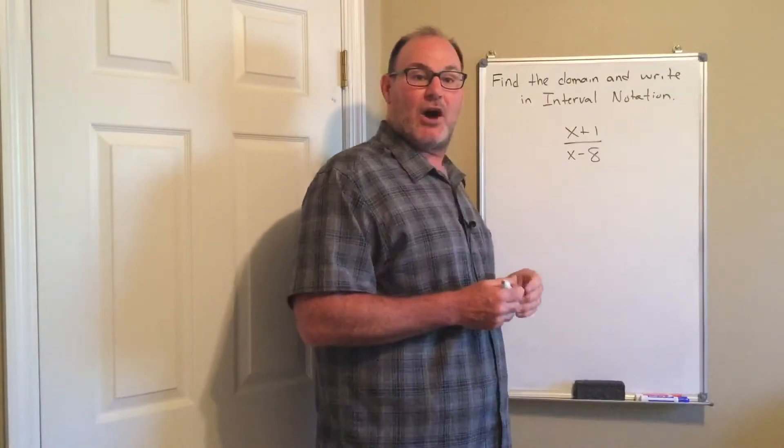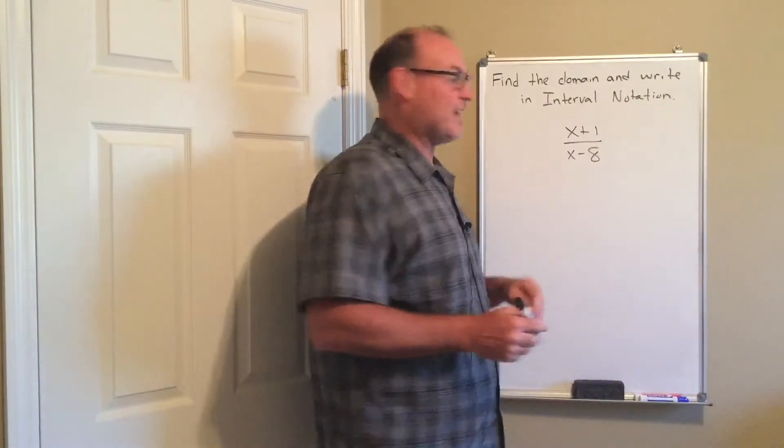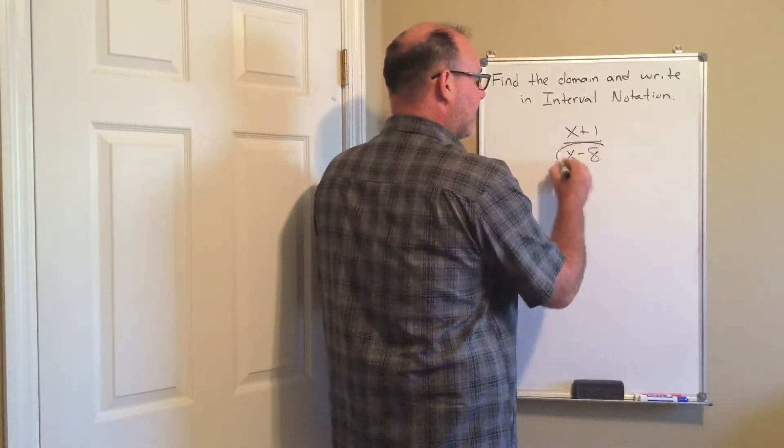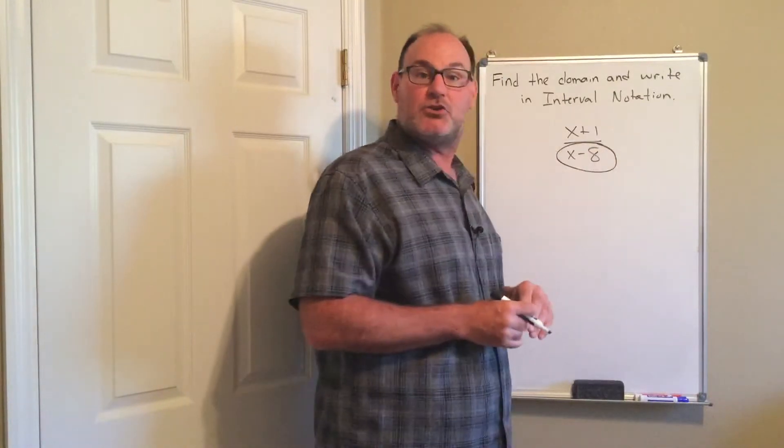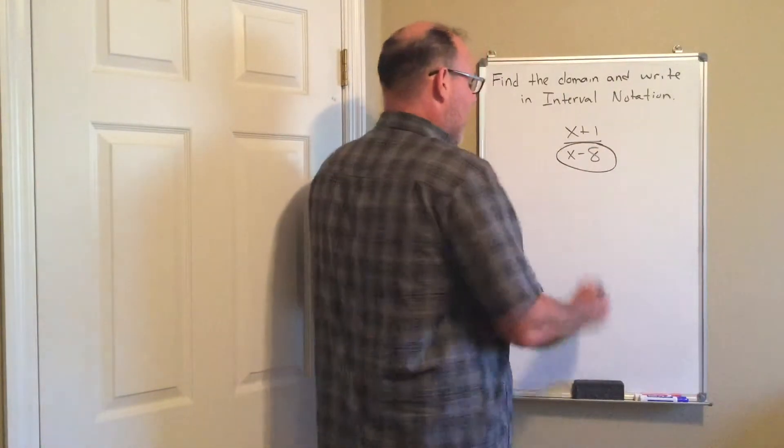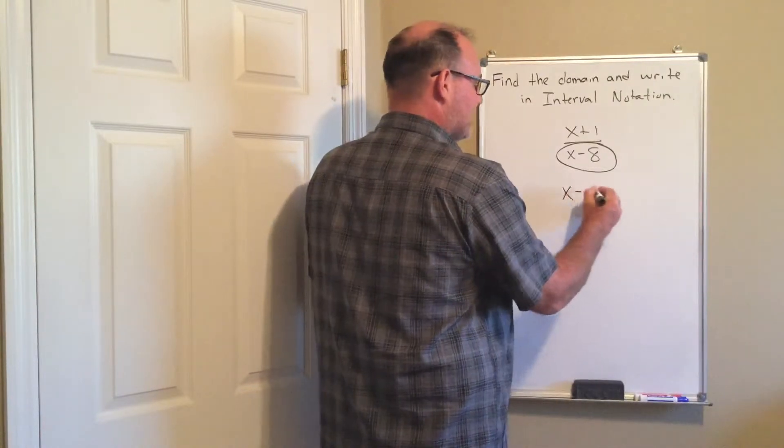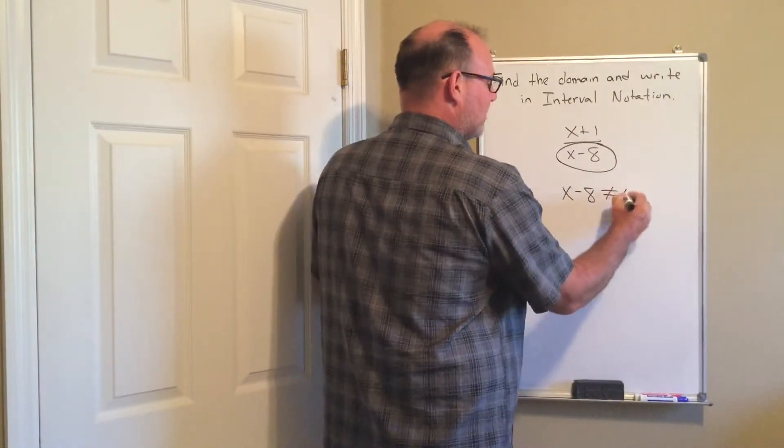So to find the domain of a rational expression you do this. The only part that matters is the denominator. You can ignore the numerator when you're finding the domain, and I am going to say that x minus 8 cannot be equal to 0.